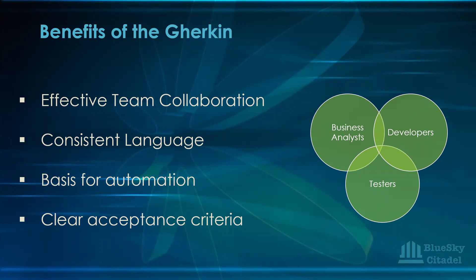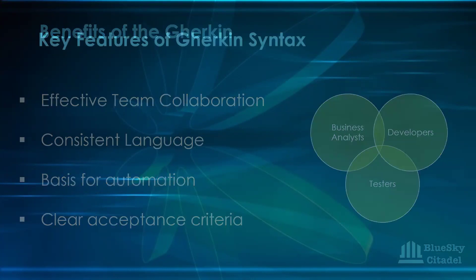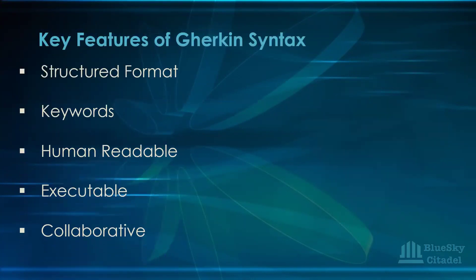In summary, the benefits of Gherkin include improved team collaboration, consistent language, a basis for automation, and clear acceptance criteria. When Gherkin is used effectively, it leads to a more efficient and effective software development process, resulting in high-quality products. Requirements are clearly defined, everybody knows what they're working on, and you move through the project methodically.